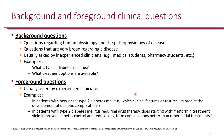Foreground questions, which are typically asked by experienced clinicians, could include: in patients with new onset type 2 diabetes, which clinical features or test results predict the development of diabetes complications? Or, in patients with type 2 diabetes mellitus requiring drug therapy, does starting with metformin treatment yield improved diabetes control and reduce long-term complications better than other initial treatments? These questions are not very broad — they ask very specifically.